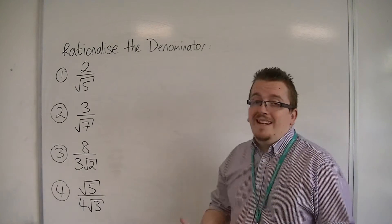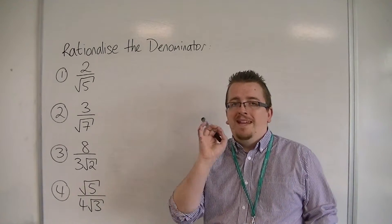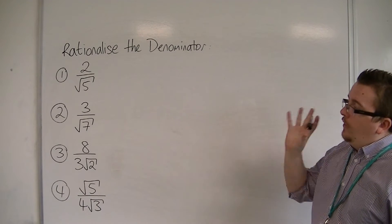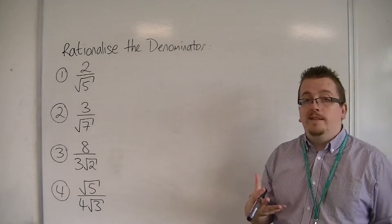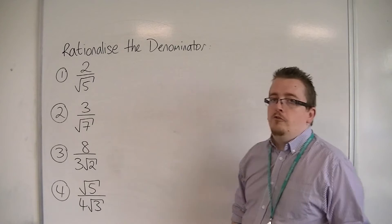We're going to be using the same technique that I looked at in the previous video. Effectively, we multiply each one of these examples by 1, and I choose how the 1 is going to look. I choose the numerator and denominator to be the surd that I'm given in the denominator for each of the examples.